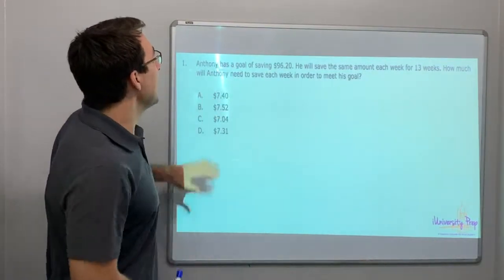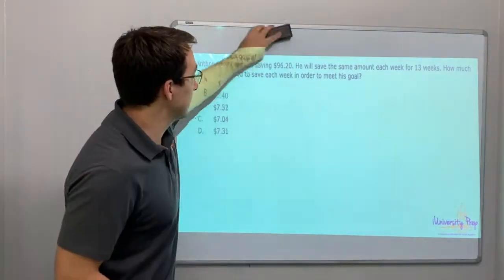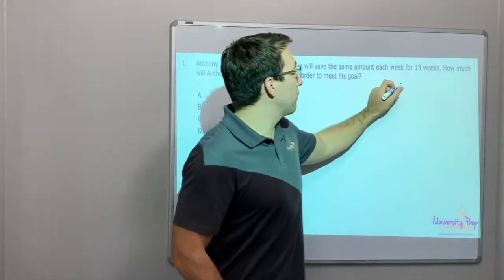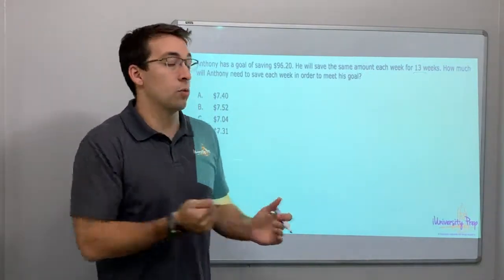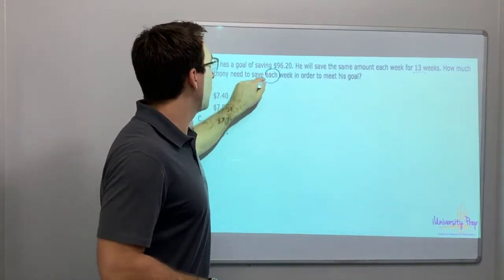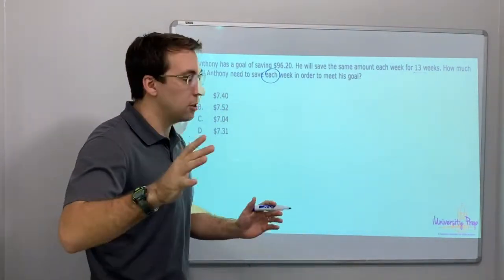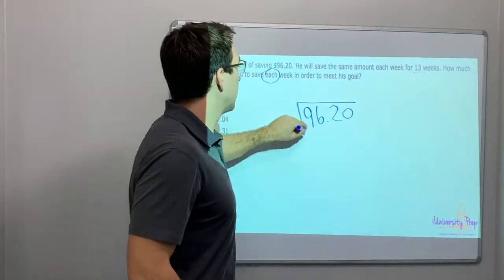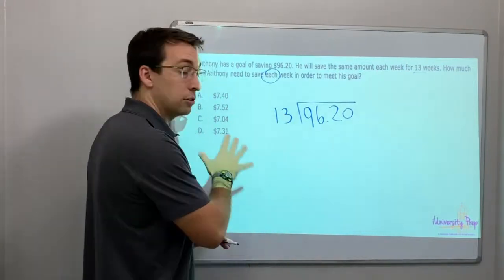Anthony has a goal of saving $96.20. He will save the same amount each week for 13 weeks. How much will Anthony need to save each week in order to meet his goal? Each week - that's a division keyword. If it's talking about each, then you need to divide most likely. So we'll say 96.20 divided by 13.